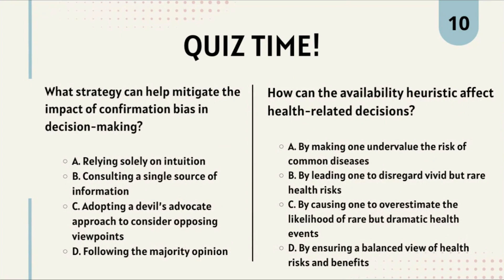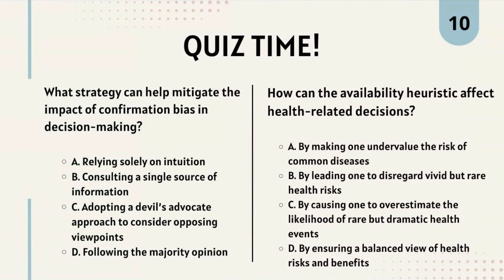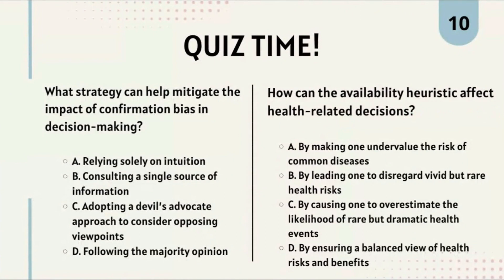Question 3: What strategy can help mitigate the impact of confirmation bias in decision making? Option A: relying solely on intuition. Option B: consulting a single source of information. Option C: adopting a devil's advocate approach to consider opposing viewpoints. Option D: following the majority opinion. The correct answer is Option C — adopting a devil's advocate approach to consider opposing viewpoints.